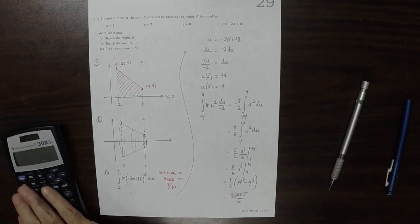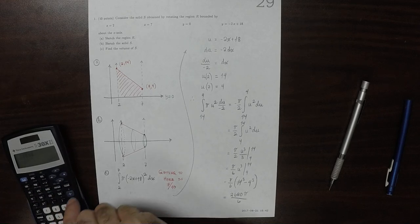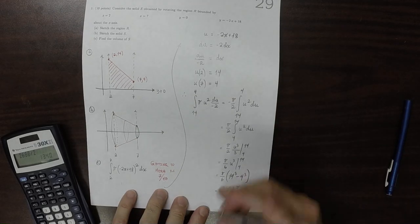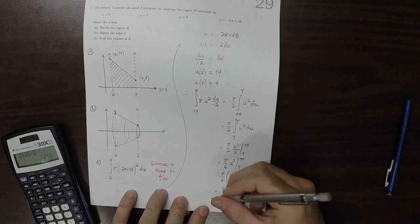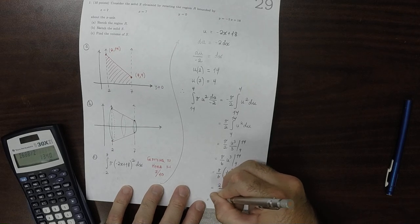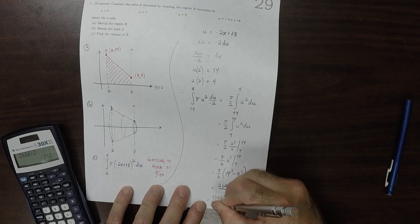And then that's divisible by 2. So 2680 divided by 2 is 1340. So that's probably as good as we can do. 1340 pi over 3.